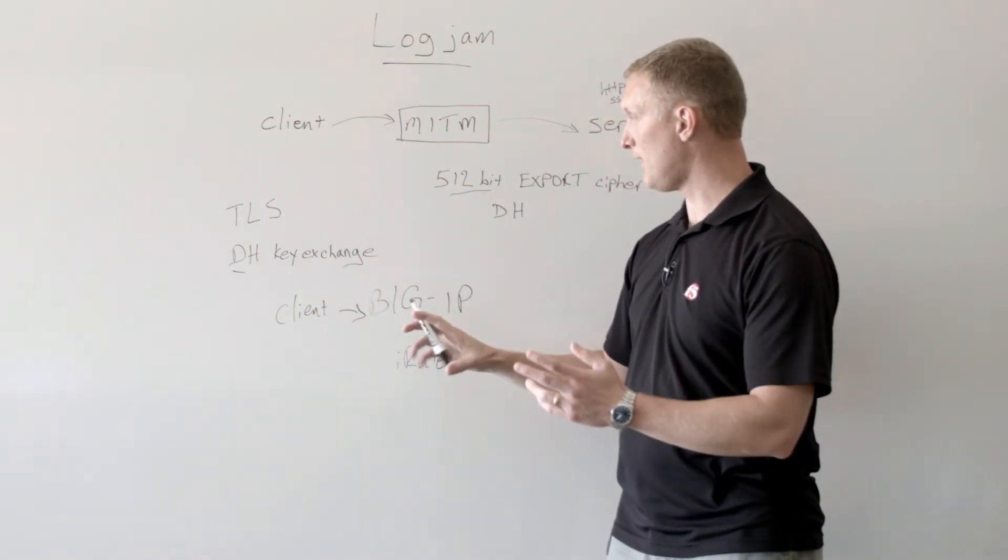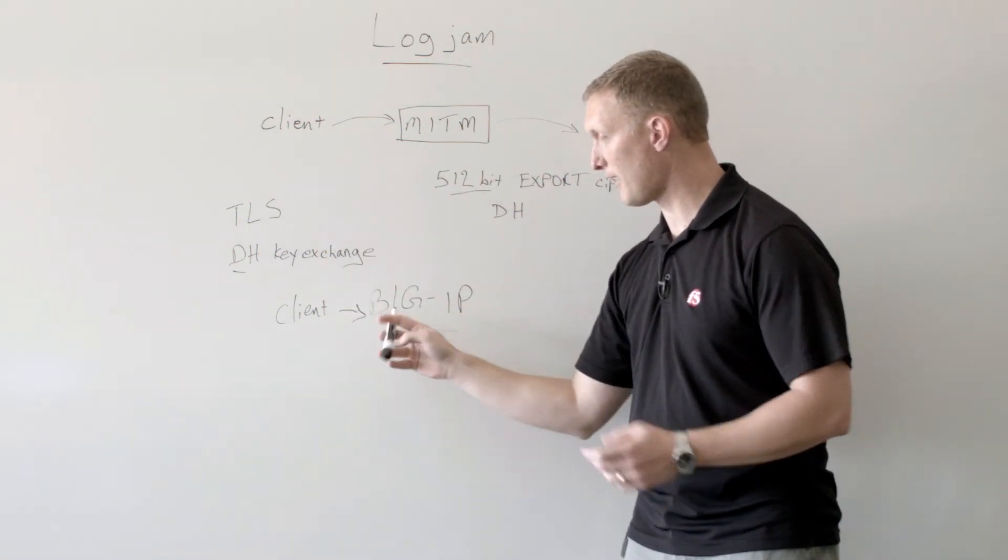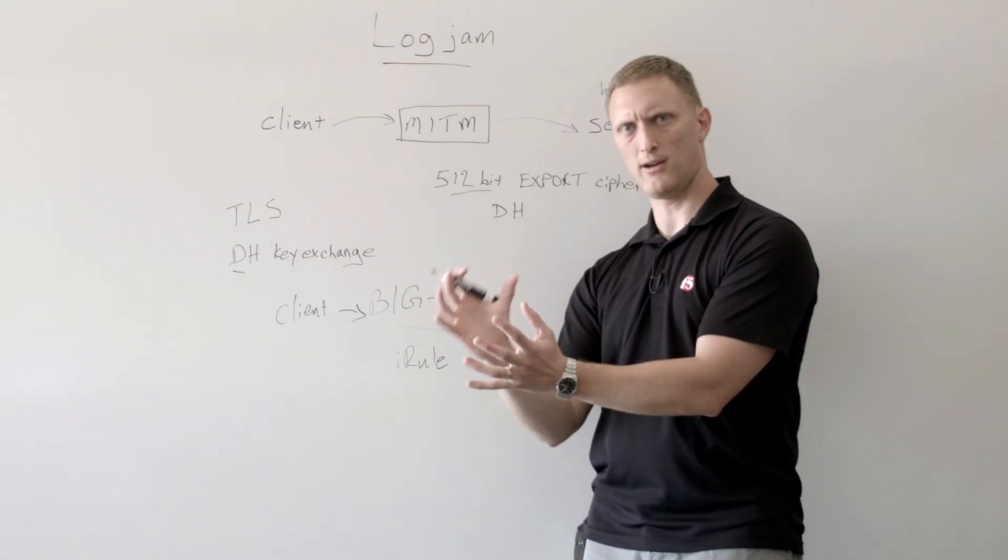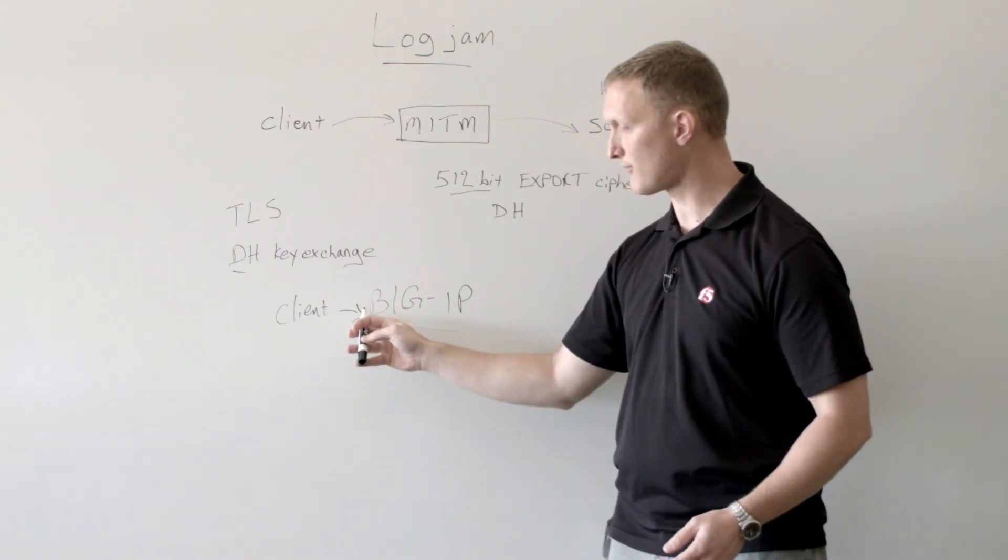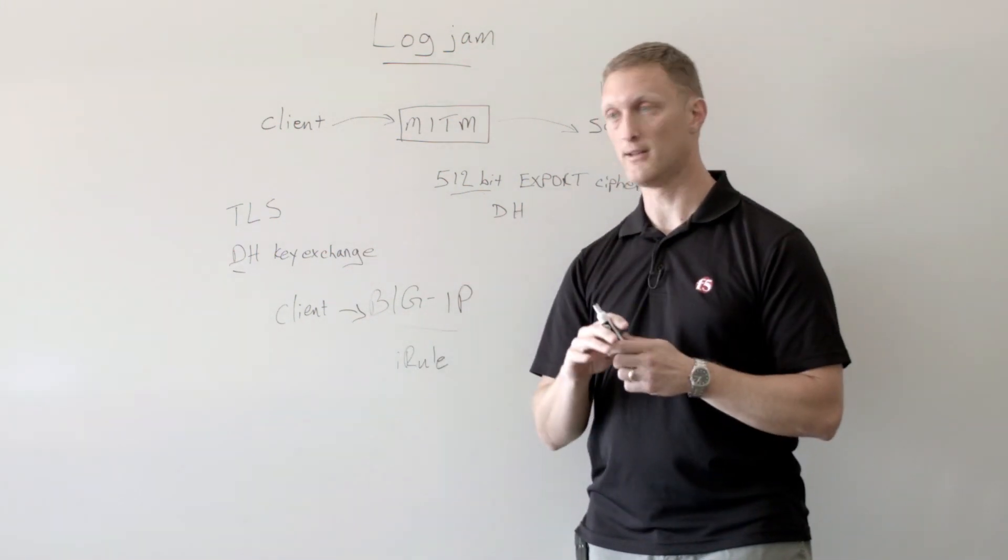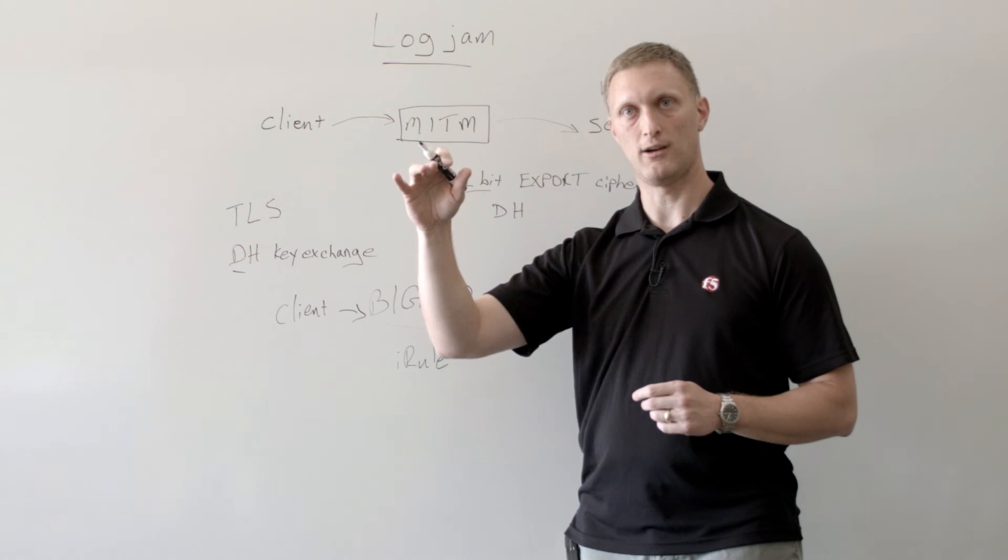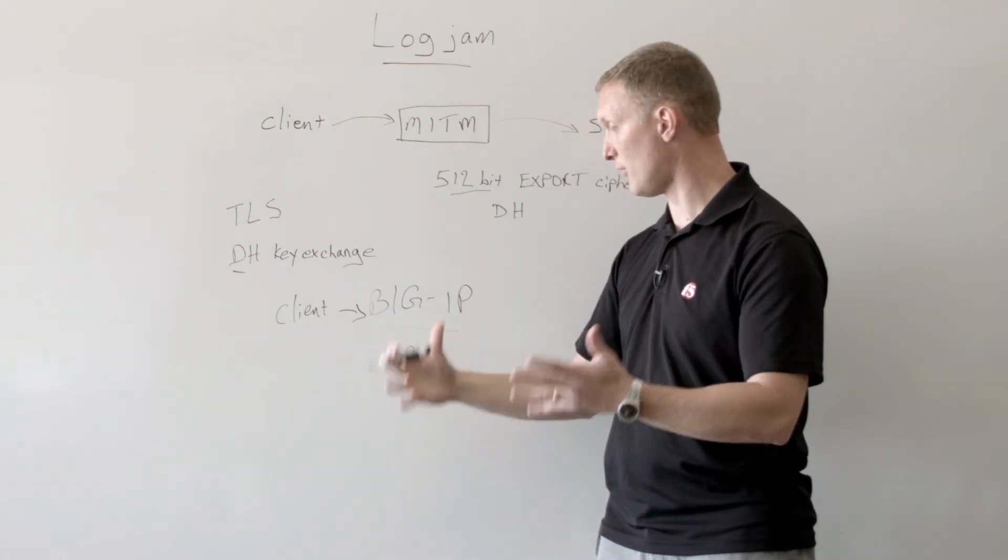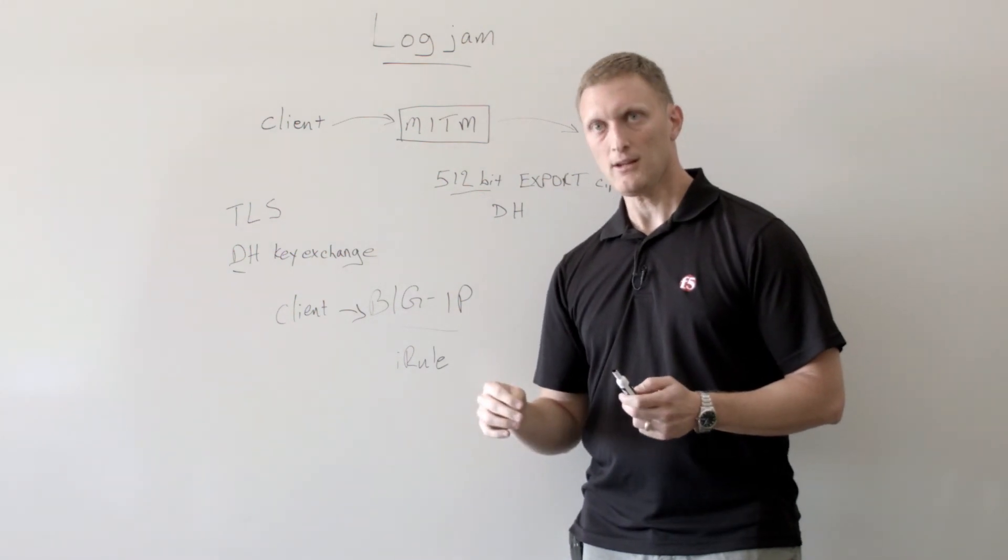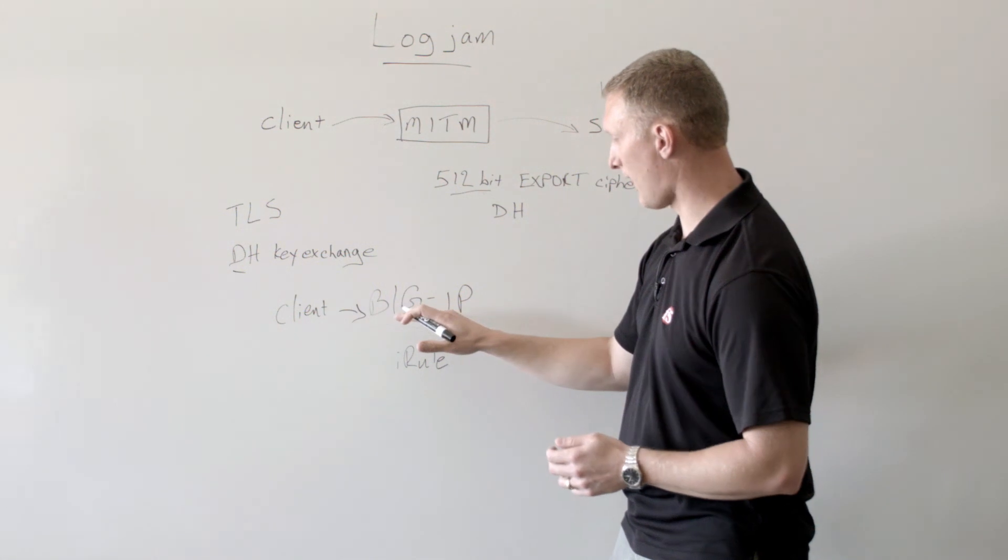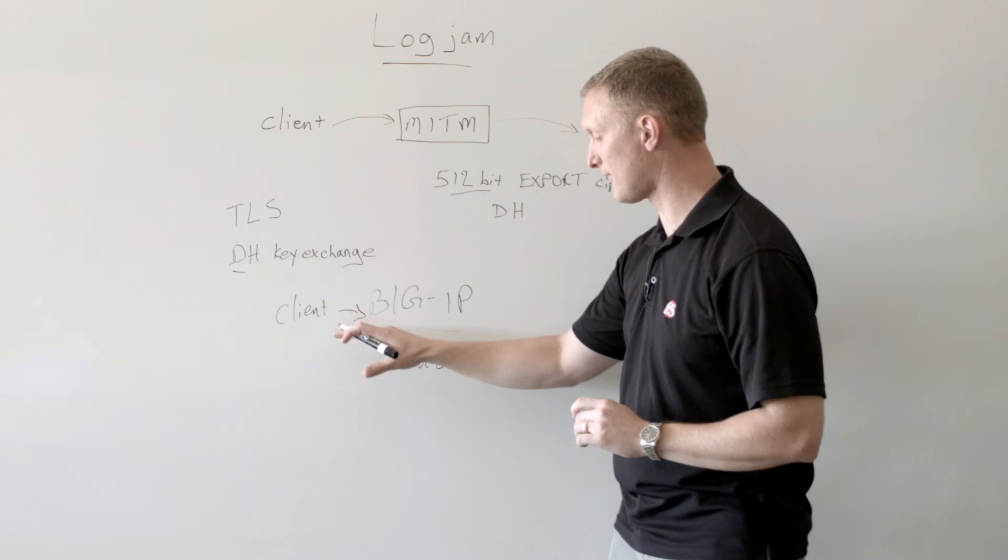And essentially what the iRule checks for is if a client is coming into the Big IP and the Big IP request says, hey, let's use one of these crazy low-level Diffie-Hellman export type ciphers, then the iRule is going to check for that and it's going to say, hey, no, no, no, we're not even going to allow that to happen. And so we can link to that iRule. And there's a couple of articles out there that show a little bit more about this. But yeah, and that's actually for non-SSL offload. And so anyway, but we'll link to that iRule off of this video.